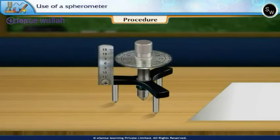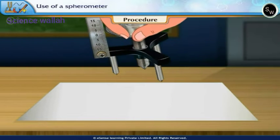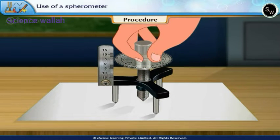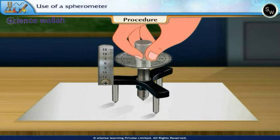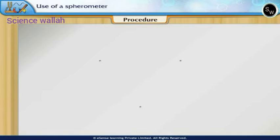Procedure: Let us first measure the mean distance between the legs of the spherometer. Place the spherometer on a plain paper and press it gently so as to get impressions of the tips of the three legs. Mark these pricks as A, B, and C.